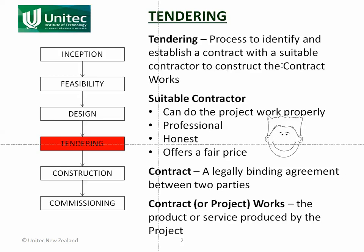Let's look at some of these words. A suitable contractor - we want a contractor that can do the job properly. We don't want someone who's going to do a bad job, or who doesn't have enough resources to do the job in the time required. We don't want someone who hasn't done it before and is going to make a lot of mistakes and give us shonky workmanship. We want someone that can do the job properly - we want them to have the experience, the resources, and the skills. We want them to be professional.